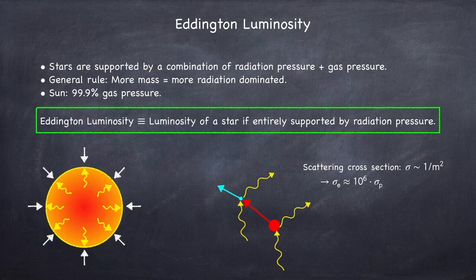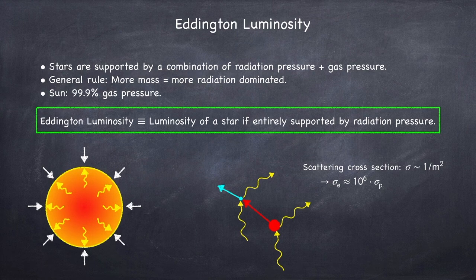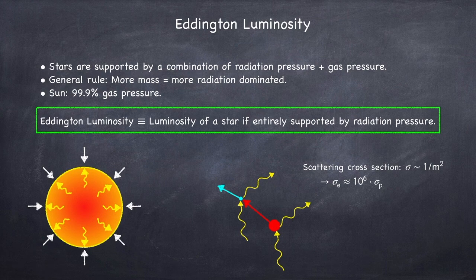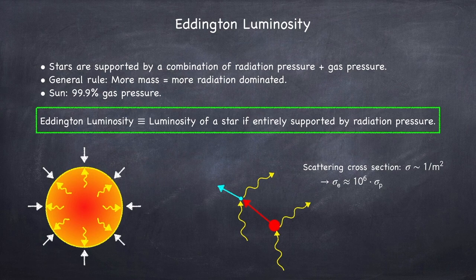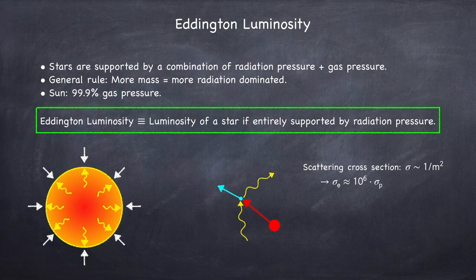So for each photon that scatters off a proton, about a million will scatter off an electron. This scattering cross-section we already discussed in the previous video, Stellar Physics 1b, and it's the Thomson cross-section. So while it is true that photons do scatter off protons, we can safely ignore that interaction as it would be a one in a million correction.